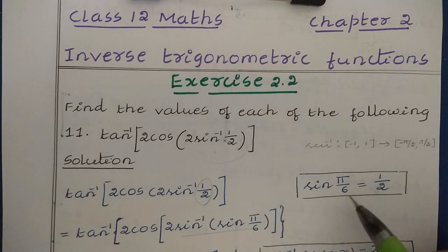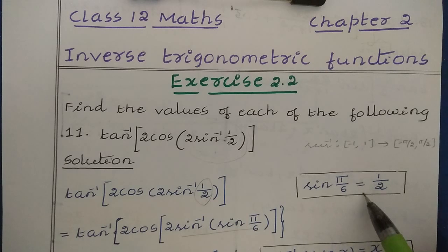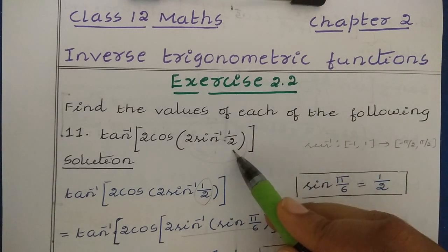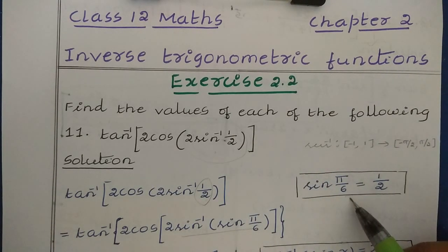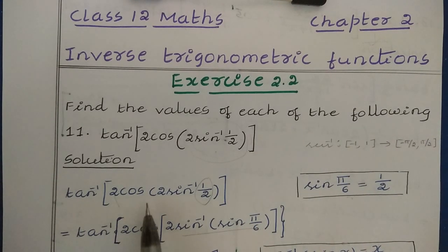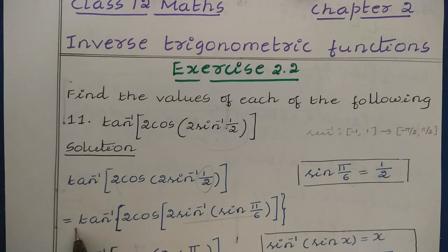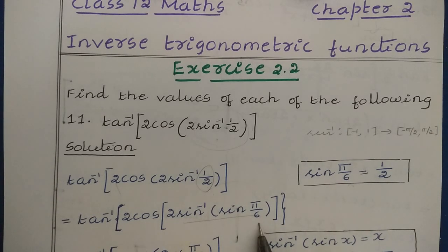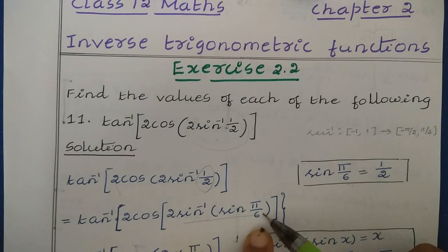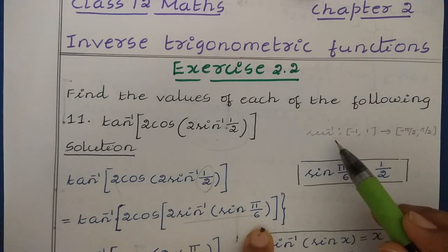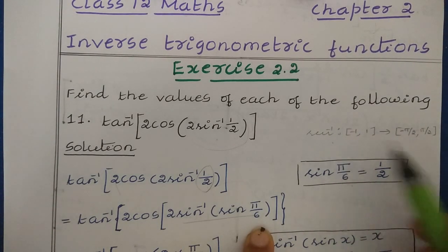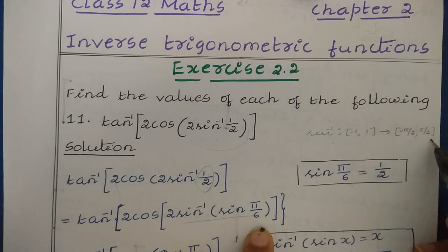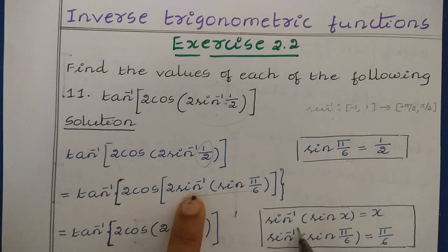We know that sin 30° which is sin(π/6) equals 1/2. So we replace 1/2 with sin(π/6). Now, π/6 lies within the range of the sine inverse function, which is [−π/2, π/2], so we can apply the formula sin⁻¹(sin x) = x.